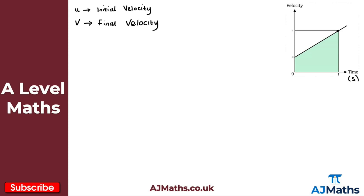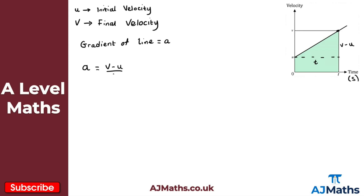From this velocity-time graph, what can we actually deduce? We should be familiar with the idea that the gradient of this line gives us the acceleration. The gradient of the line gives us little a. To work out the gradient of this line, I'm going to think about this as a triangle. The gradient is my change in y over my change in x. The change in y is v minus u, and the change in x is t minus zero, which is just t.